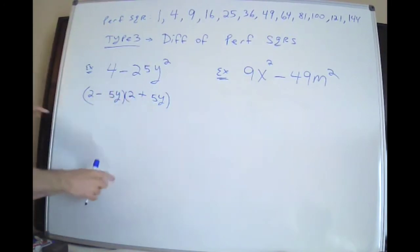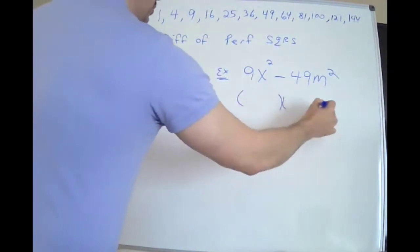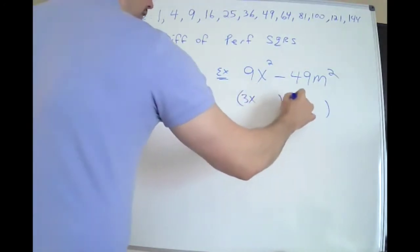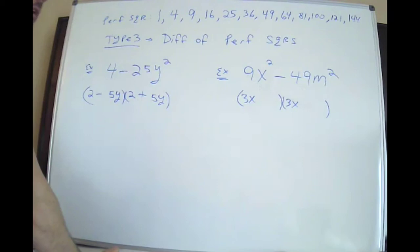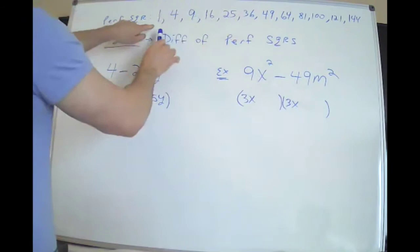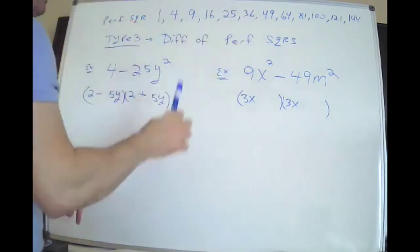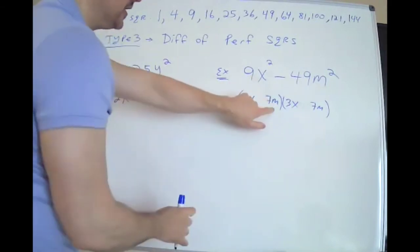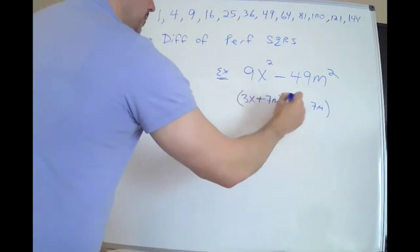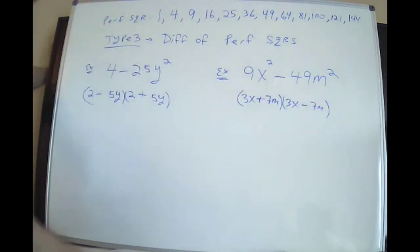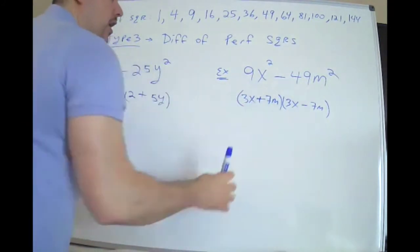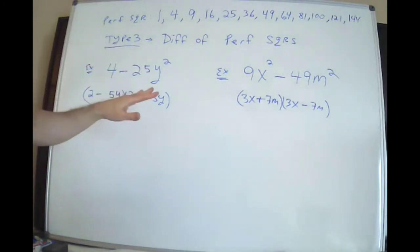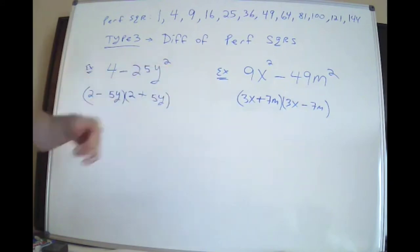Something times itself to make the front, something times itself to make the end. This next one looks a little more advanced but it's not more difficult. I need 9x squared — so something times itself. Nine and one are not something times itself. I need to make 49: one, two, three, four, five, six, seven — seven times seven. So seven M, seven M — something times itself makes the front, something times itself makes the end. One dude gets the plus, one dude gets the minus. It doesn't matter which. You built a copy but with different signs. This is the difference of perfect squares: build a copy and make the signs different.